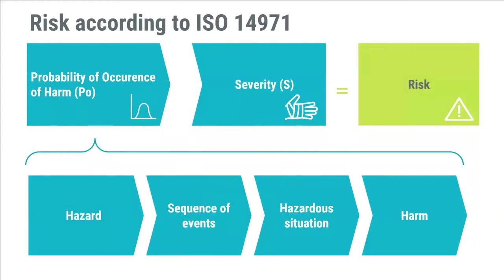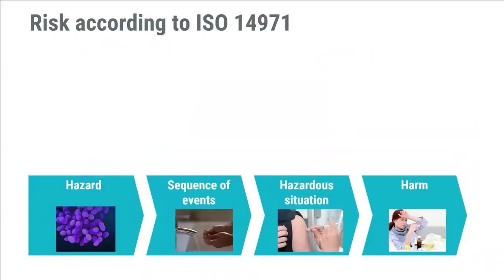The secret of software risk management is hidden in the probability of occurrence of harm. PO is a combination of four factors: hazard, sequence of events, hazard situation, and harm. To make this more tangible, I'll walk through an example using bacteria. Bacteria is our hazard, and through poor hand washing — which is the sequence of events — a patient is exposed to the bacteria, which can cause an infection, which is the harm.